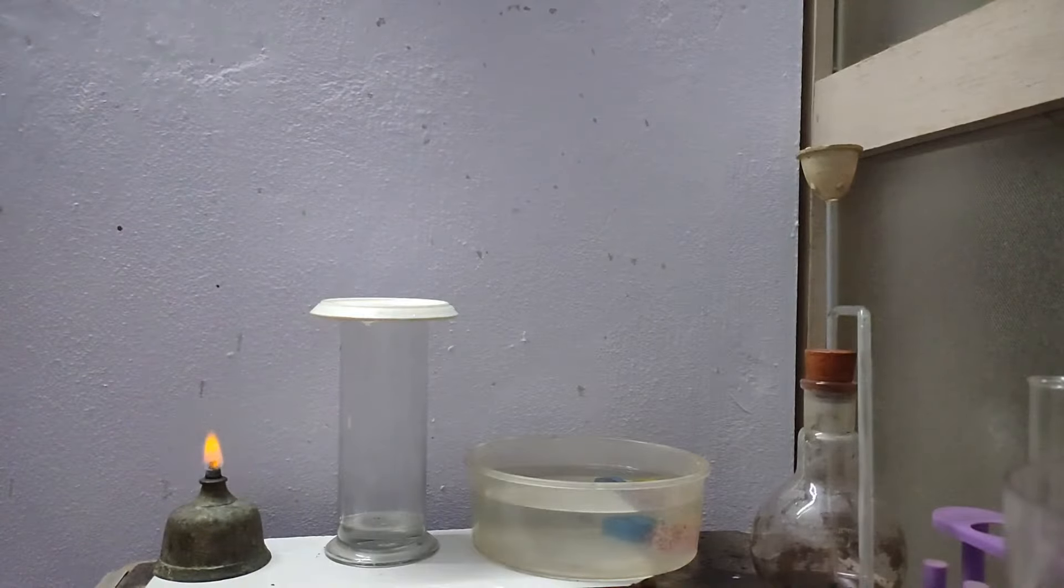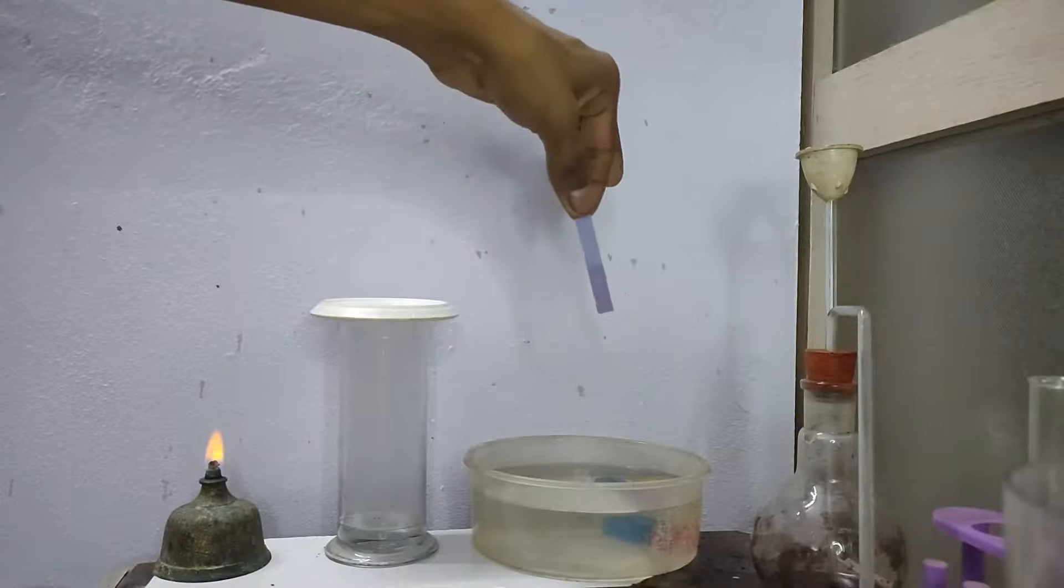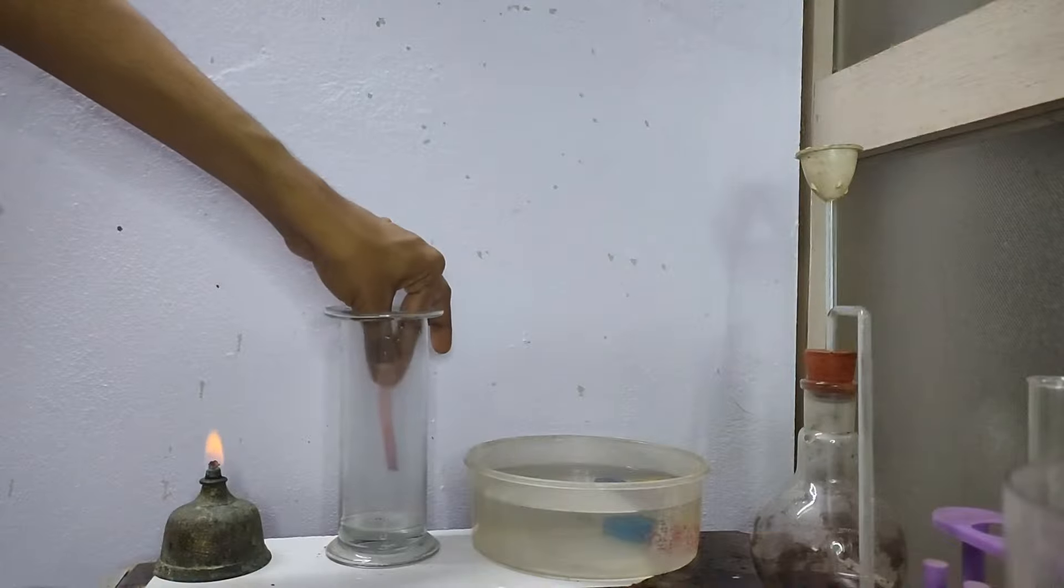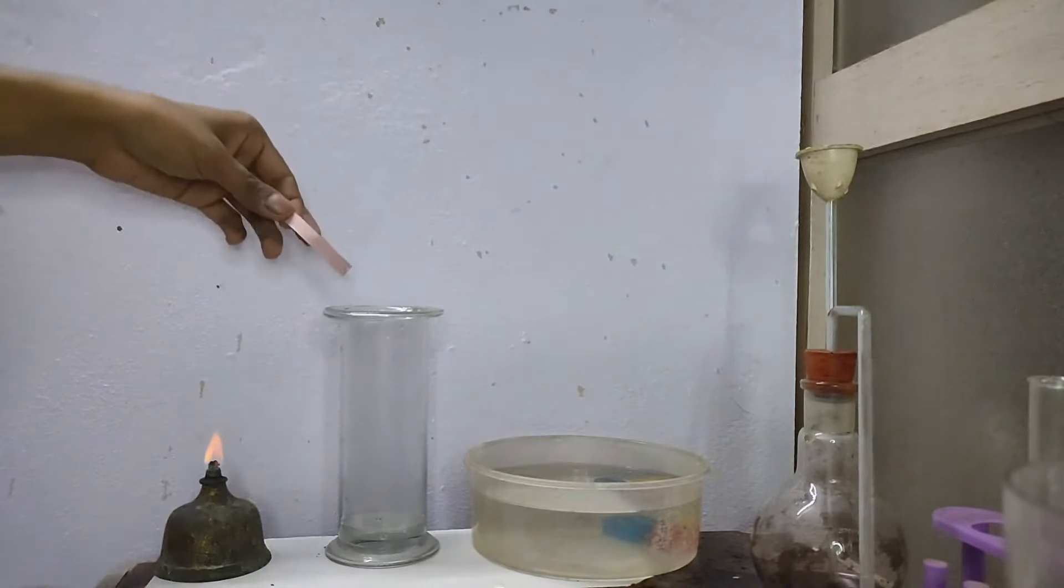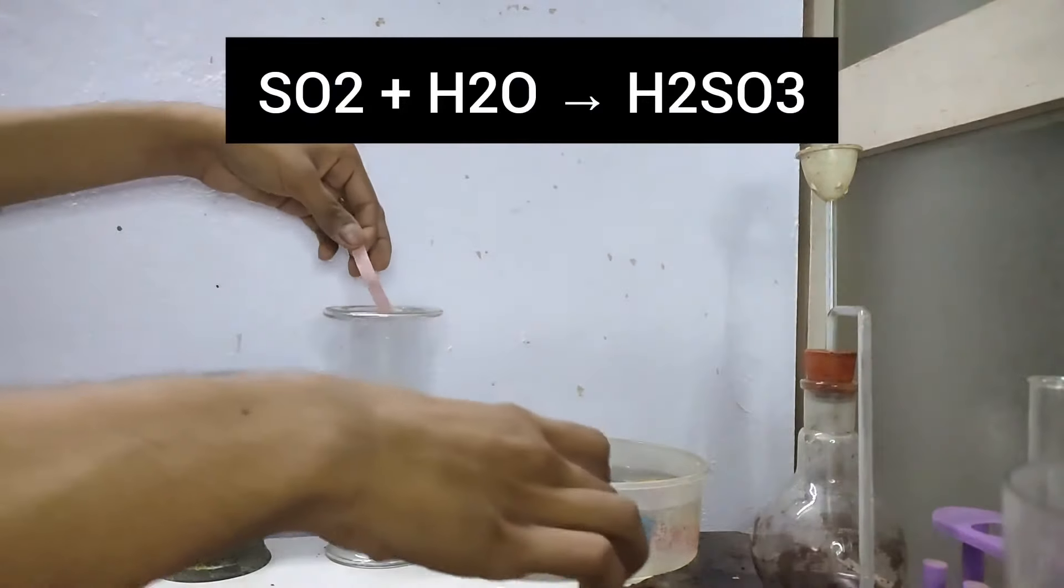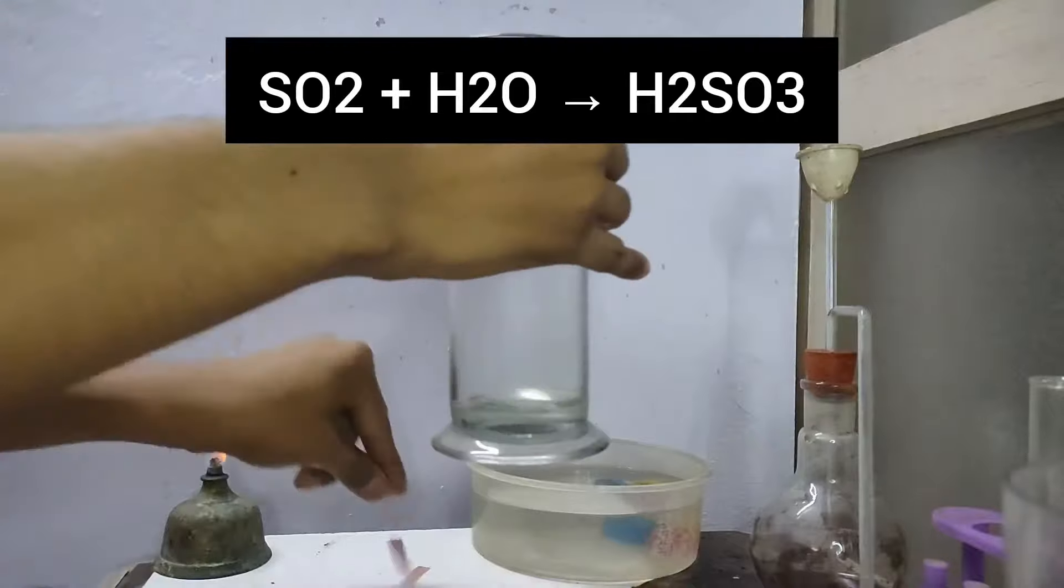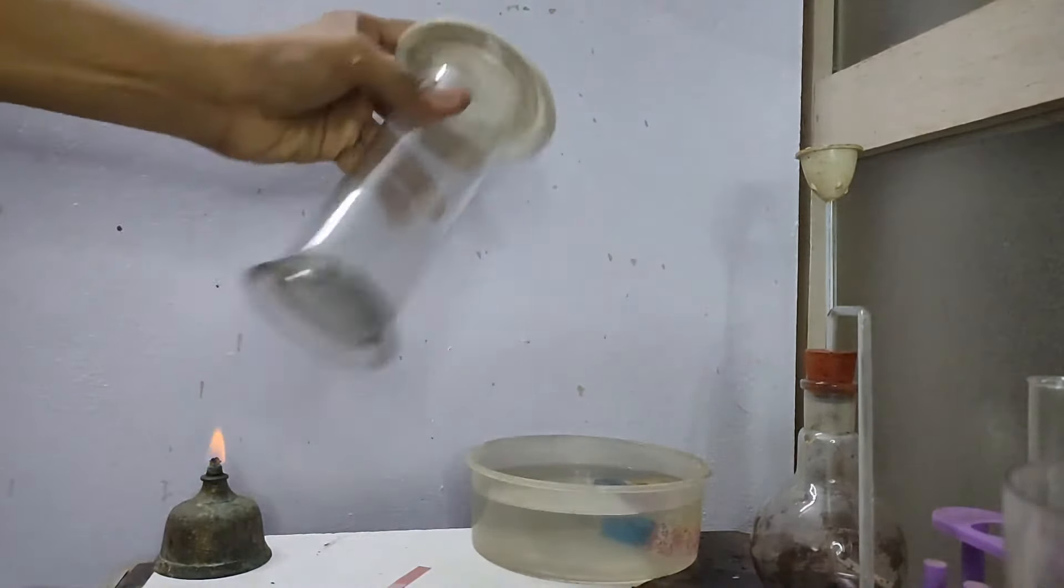To show that sulphur dioxide is acidic gas, I am taking a blue litmus paper and placing inside the gas jar and you can see that sulphur burns in oxygen to produce sulphur dioxide gas which dissolves in water to give sulphurous acid. Therefore, it turns blue litmus paper red.